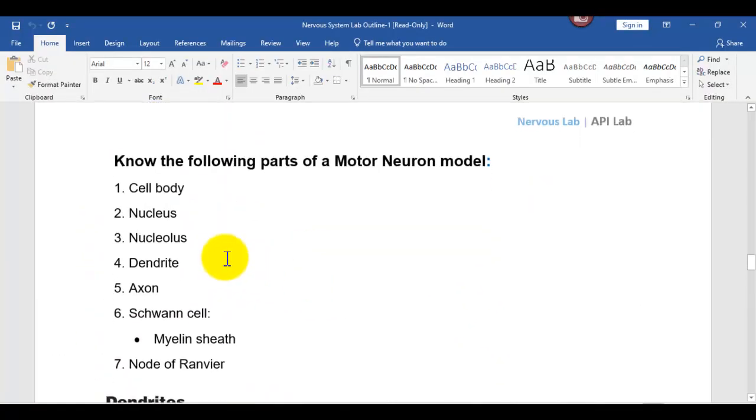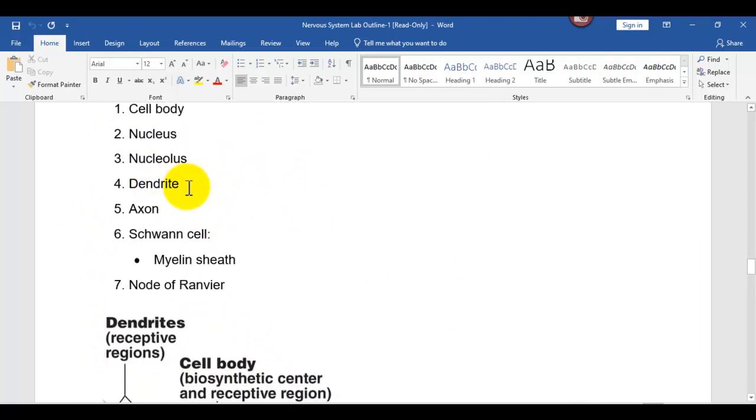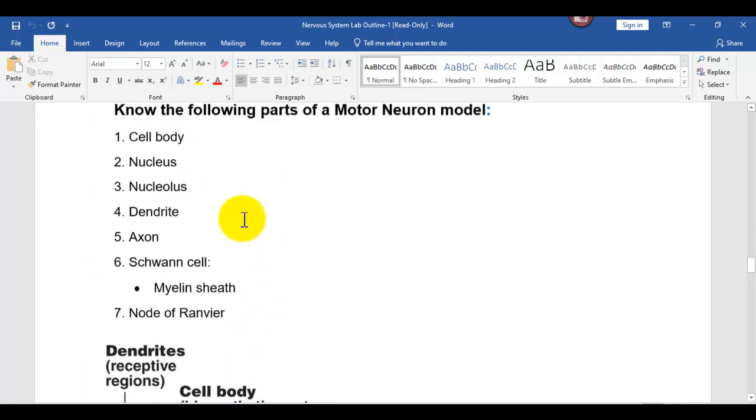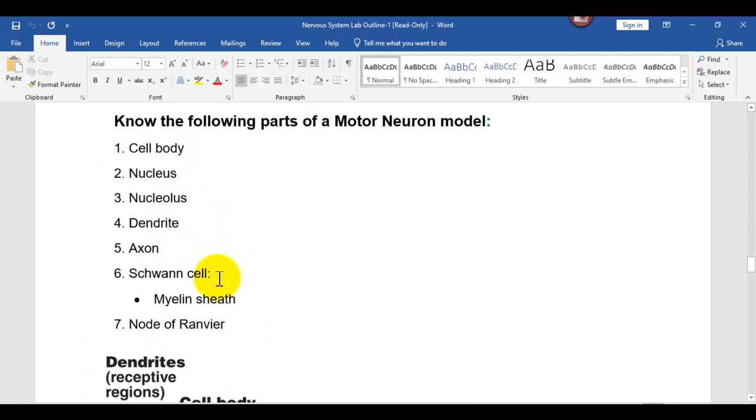So going back to our list: cell body, nucleus, nucleolus, the dendrites, those little extensions coming off, axon, Schwann cell with a myelin sheath, a node of Ranvier.